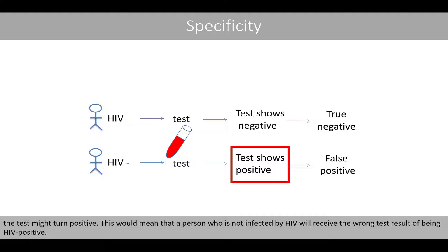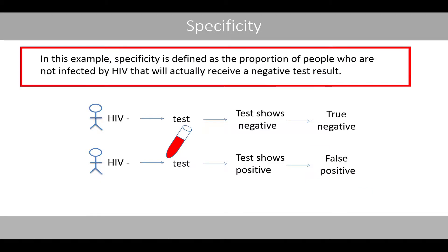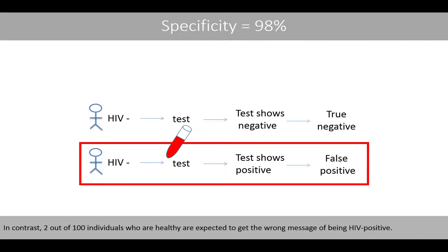If the test turns positive for an uninfected person, that person would receive the wrong result of being HIV positive. This is called a false positive result because it is false that the person is infected by HIV. Specificity is defined as the proportion of people who are not infected by HIV that will actually receive a negative test result. For example, if the specificity of a rapid self-test for HIV is 98%, this means that 98 out of 100 individuals who are not infected by HIV are expected to get a negative result. In contrast, two out of the 100 healthy individuals are expected to get the wrong message of being HIV positive.